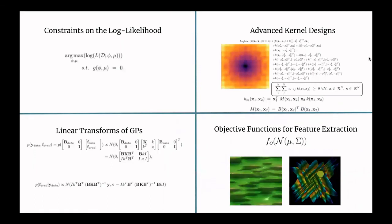And these are some of the directions we're working on right now and in the future. Constraint likelihood optimizations, advanced kernel designs, linear transform of GPs, and sophisticated objective or acquisition functions for feature extraction.